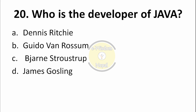Question number 20 — last question for today: Who is the developer of Java? Options: Dennis Ritchie, Guido van Rossum, Bjarne Stroustrup, James Gosling. Option D — James Gosling — is the developer of Java. So option D is the correct answer.